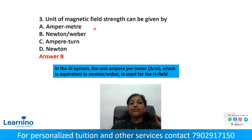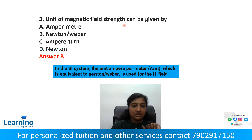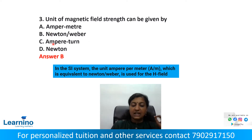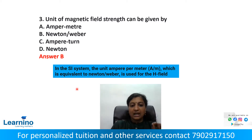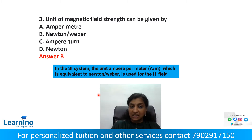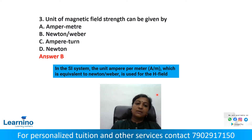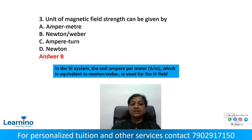Question number 3: The unit of magnetic field strength can be given by? The options are ampere meter, newtons per weber, ampere turns, and newtons. In the SI unit, the unit is ampere per meter, which is equivalent to the H field, and we also call it newtons per weber — that is magnetic field strength. The correct answer is Option B: newtons per weber.